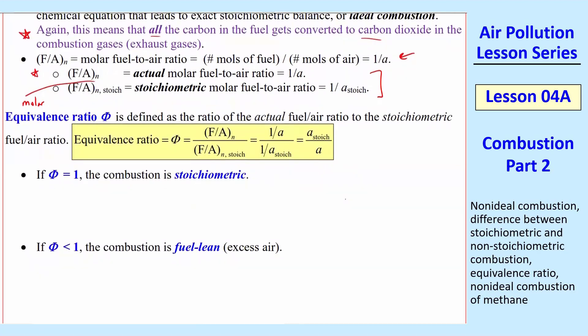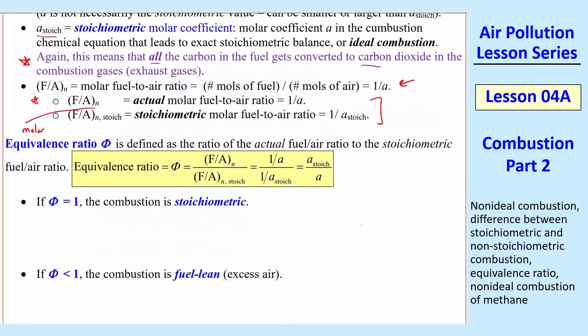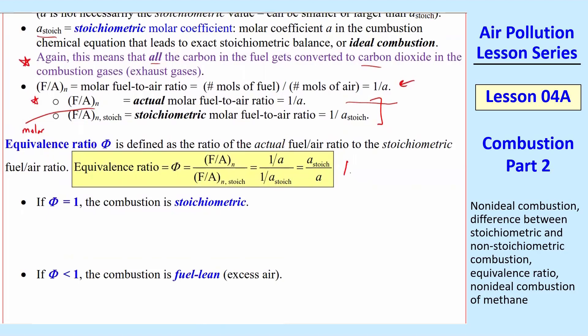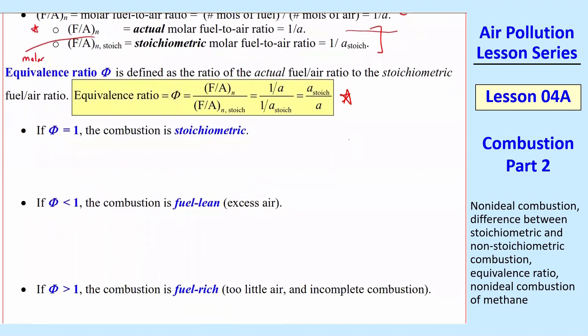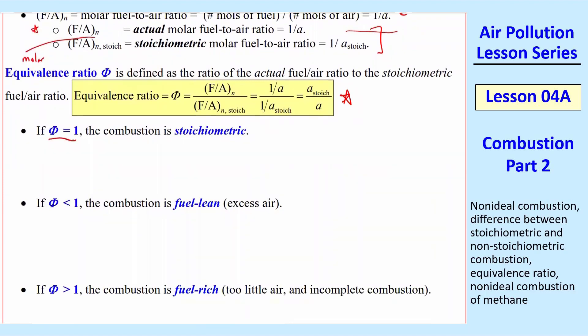Now we'll define equivalence ratio. And this is simply the ratio of FAN over FAN stoic. And using these values up here, we have 1 over A over 1 over A stoic, which turns out to be A stoic over A. So this is the equivalence ratio. And it has significance for combustion. So first of all, when phi is equal 1, we have stoichiometric combustion. And that means that A is equal to A stoic. And then the fuel-to-air ratio molar is F over A N stoic.